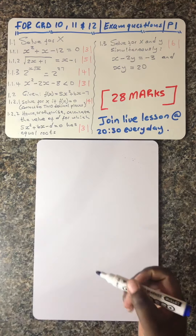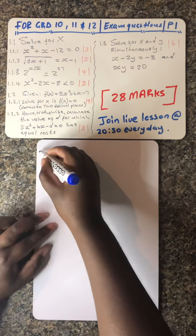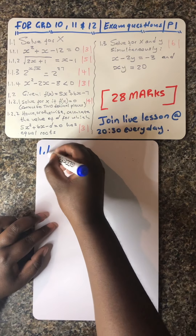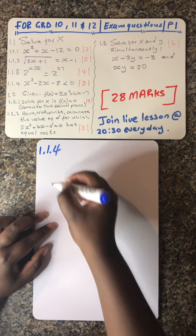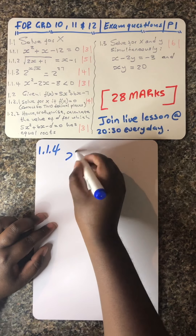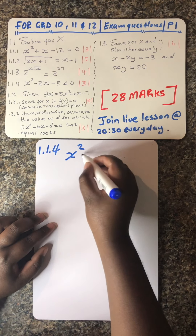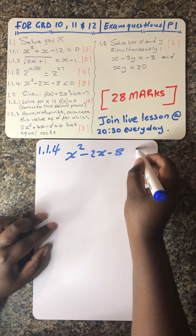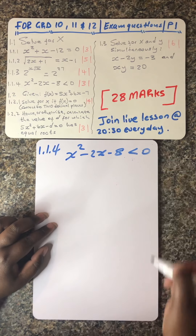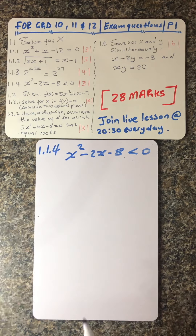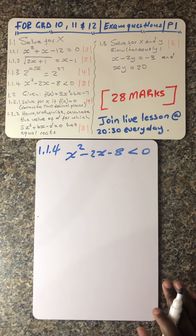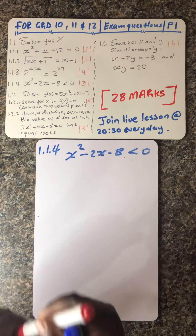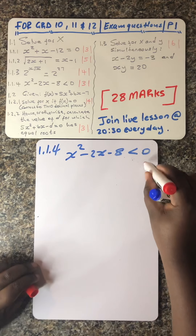I'll just write down the question. It's 1.1.4, given as x squared minus 2x minus 8 less than 0. So these are inequalities. This question is allocated 3 marks.